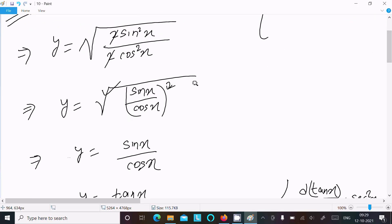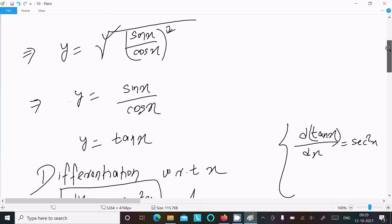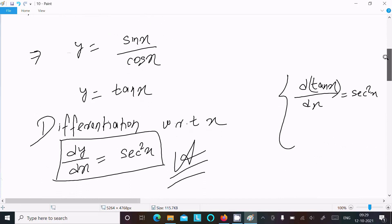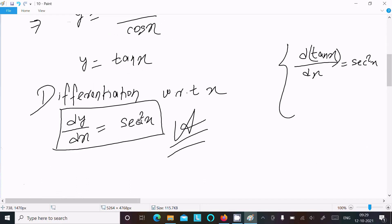After that, here you can get sine by cos, and root that remove by square. After that, y equal to sin by cos, tan. Do the differentiation with respect to x, so dy/dx equal to sec squared x.